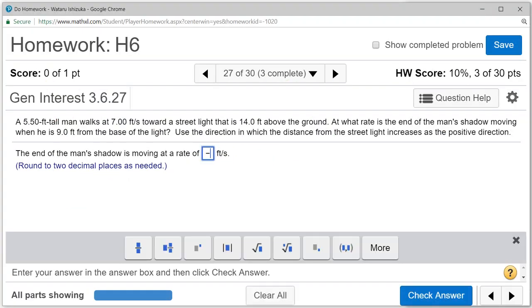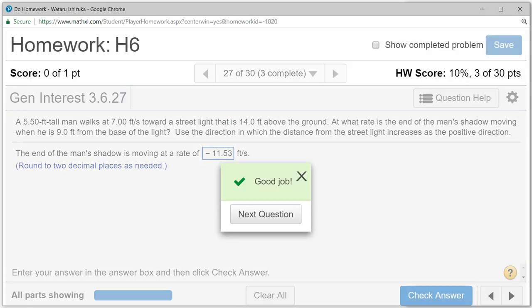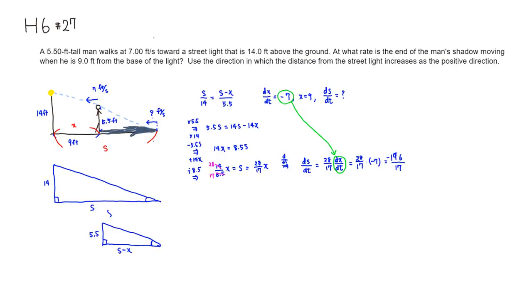So let's type it in. Negative 11.53. Check the answer. We got that. That's it. I hope that this was clear.